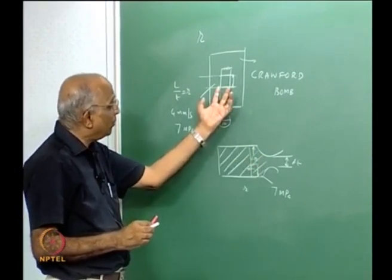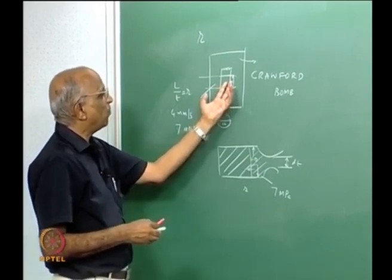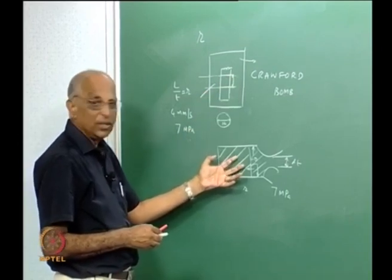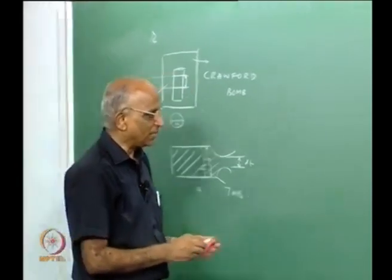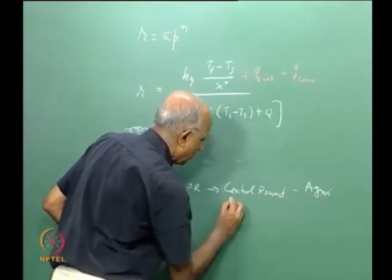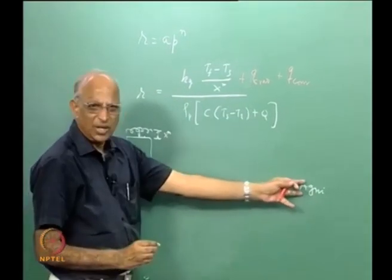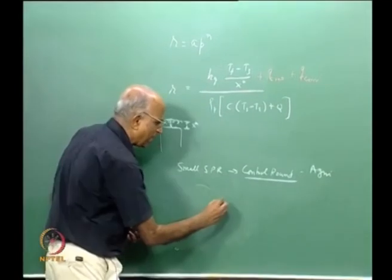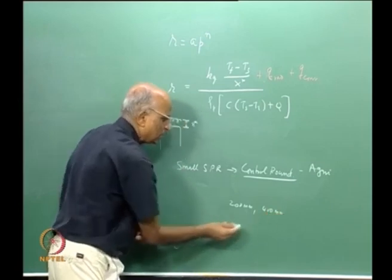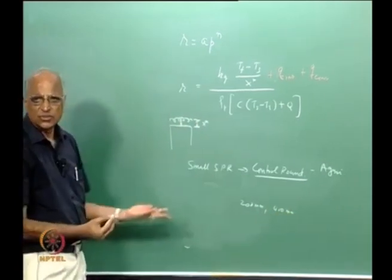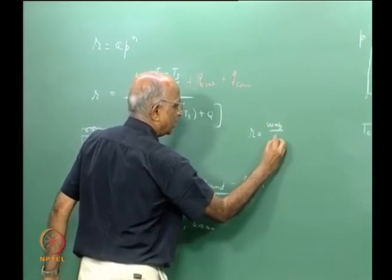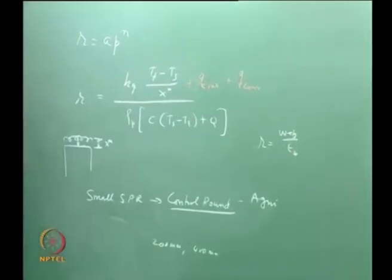In India, control rounds are called Agni rounds — but do not confuse these with the Agni missile. They are small rockets, typically around 200 mm diameter and 400 mm long, with cylindrical burning. The burn rate is determined as: r = web thickness / web burn time. This is the proper representative measurement.